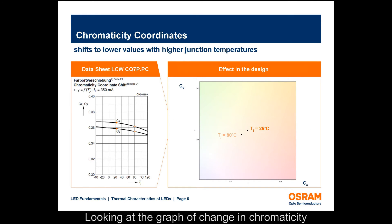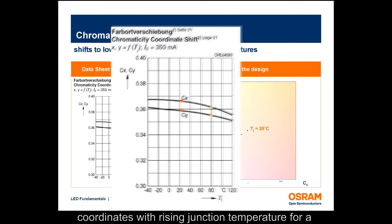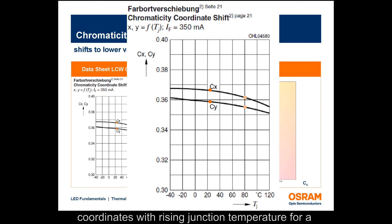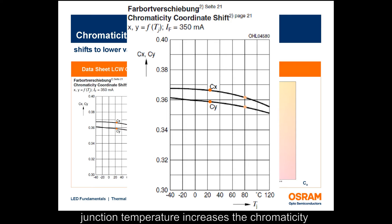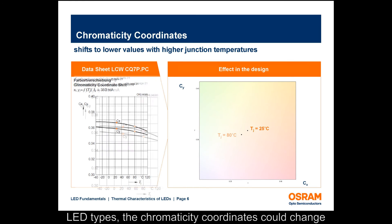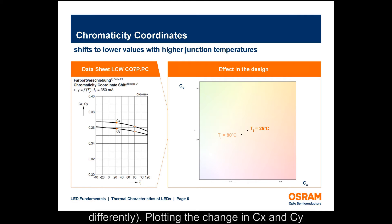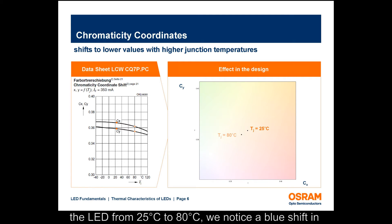Looking at the graph of change in chromaticity coordinates with rising junction temperature for a warm white Aslan SSL LED, we can see that as junction temperature increases, the chromaticity coordinates CX and CY decrease. Note that for other LED types, the chromaticity coordinates could change differently. Plotting the change in CX and CY coordinates with a rise in junction temperature from 25°C to 80°C, we notice a blue shift in the light output of the warm white LED package.